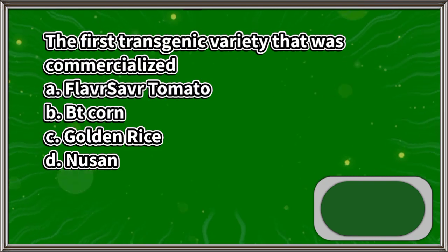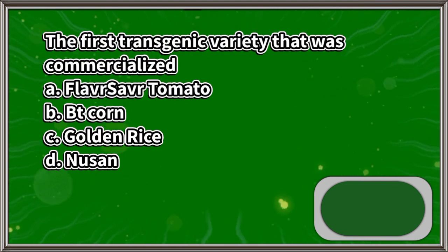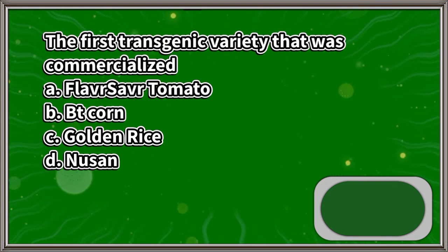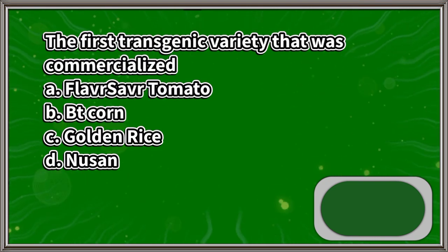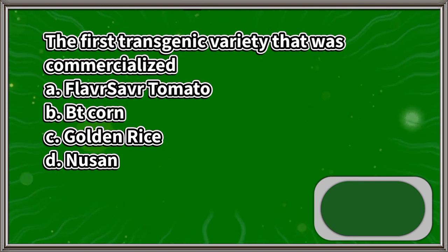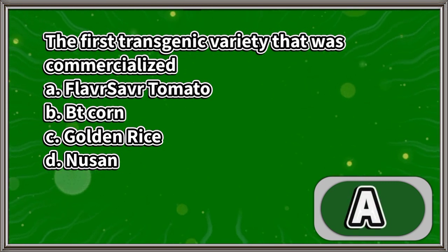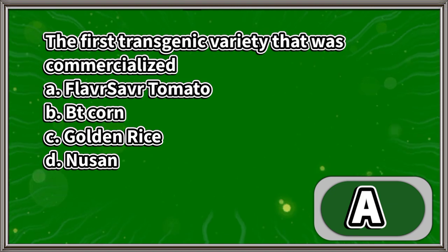The first transgenic variety that was commercialized: A. Flavr Savr tomato, B. Bt corn, C. Golden rice, D. Nusen. The answer is letter A.